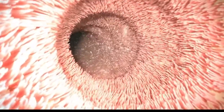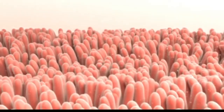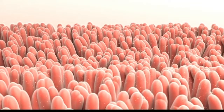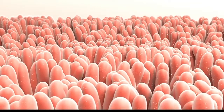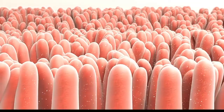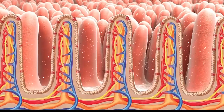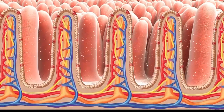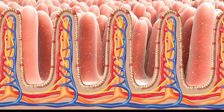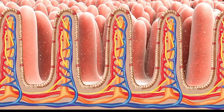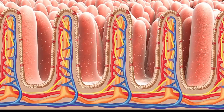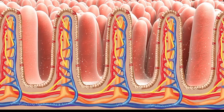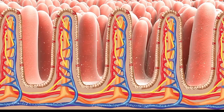The small intestine walls, also called lumen, are lined with tiny villi which stick out to provide a large surface area for the nutrients inside the food to be absorbed. Looking closer at these villi, you can see they have a rich blood supply and they are covered in a thin layer of epithelial cells.